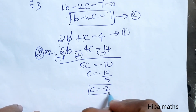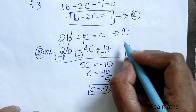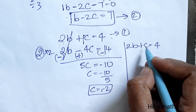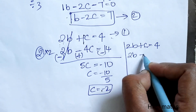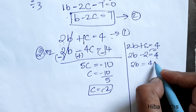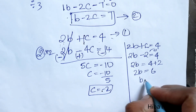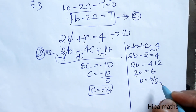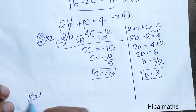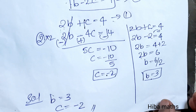The c value comes out to minus 2. Now substituting back into the first equation: 2b plus c equals 4, and c equals minus 2, so 2b equals 4 plus 2, which is 6, so b equals 6 divided by 2, which is 3. So the solution is b equals 3 and c equals minus 2. Thank you so much for watching.